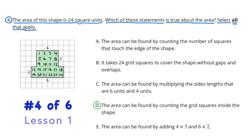Example D is correct. The area can be found by counting the grid squares inside the shape. There are 24 grid squares inside the shape.